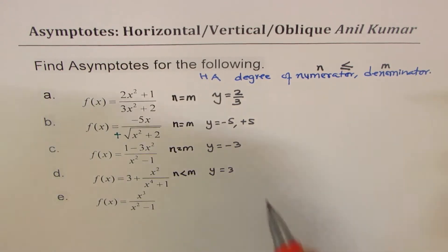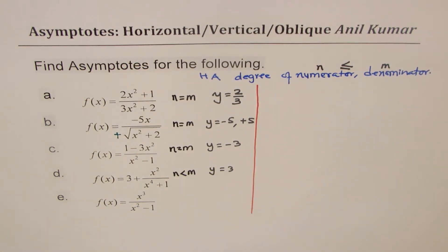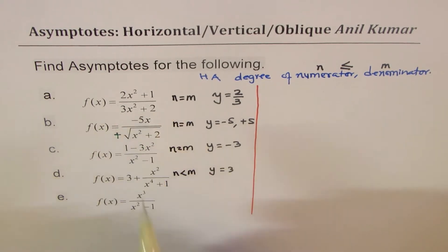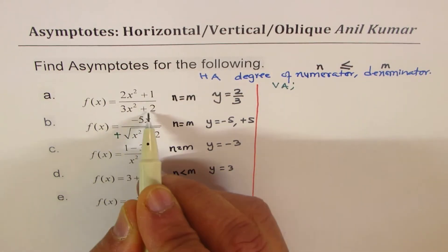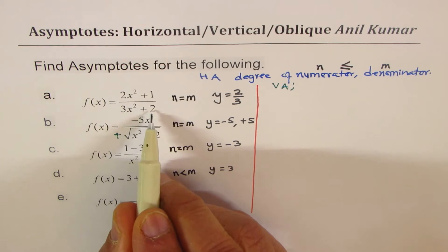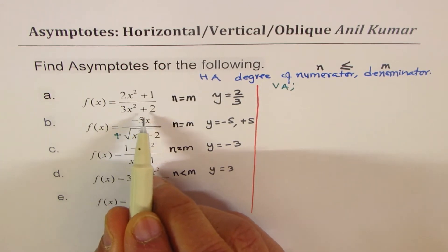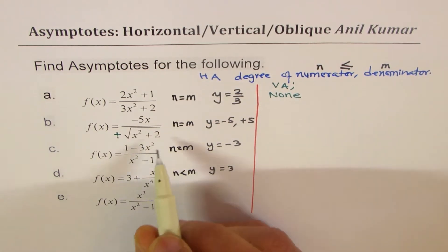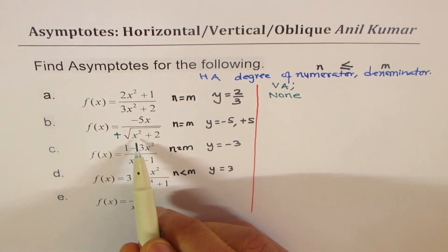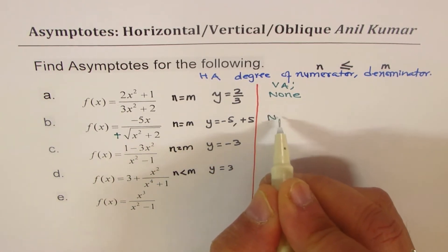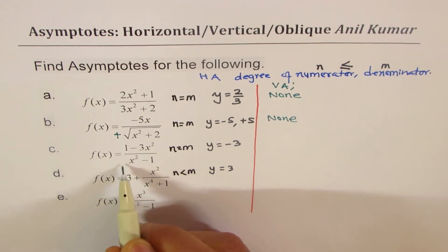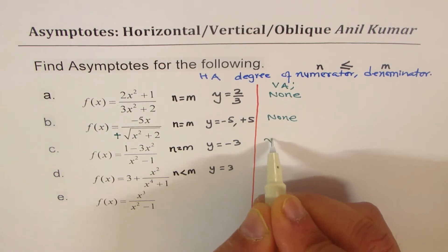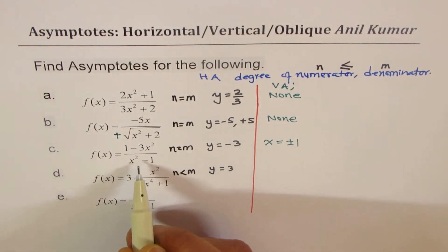Now let's look at vertical asymptotes. For vertical asymptotes we check where the denominator equals 0. In the first case, 3x squared plus 2 cannot equal 0 since x squared can't be negative, so there is no vertical asymptote. Similarly the second case has no vertical asymptote. In the third case, the denominator can be made 0 for x equals plus or minus 1, so the equations are x equals plus or minus 1.